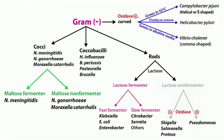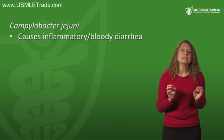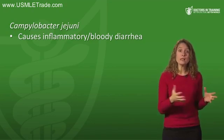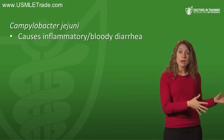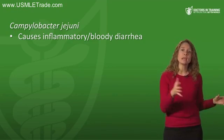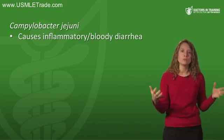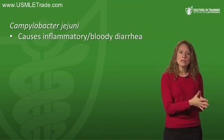On to Campylobacter. Campylobacter is a gram-negative rod that is S-shaped and oxidase positive. Campylobacter jejuni grows at 42 degrees Celsius — a little higher than average, so remember it likes that 'hot campfire.' This is another cause of inflammatory diarrhea like Shigella and Salmonella, and like those illnesses, campylobacter gastroenteritis can also be associated with bloody diarrhea.